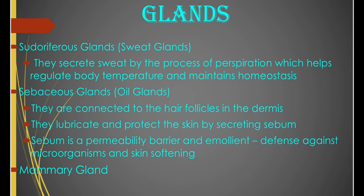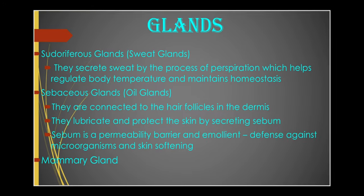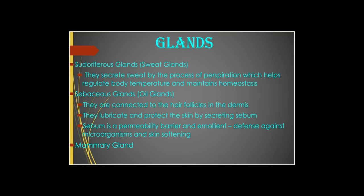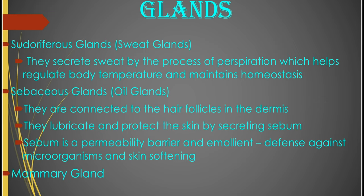There are epidermal glands, which are epidermal derivatives, on the skin of mammals. You have the sudoriferous glands, or the sweat glands. These secrete sweat by the process of perspiration, which is very important for temperature regulation and helps to maintain homeostasis. There are also sebaceous glands — the oil glands — which are connected to the hair follicles in the dermis. The sebaceous glands lubricate and protect the skin by secreting sebum. Sebum serves as a permeability barrier and also an emollient substance, which defends the body against microorganisms and softens the skin.